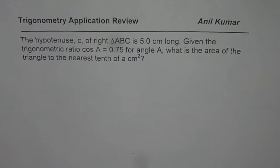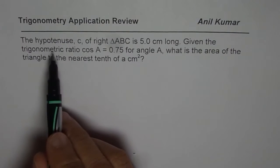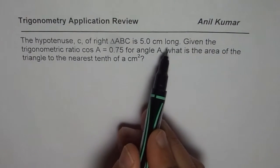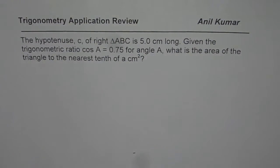I'm Anil Kumar and here is another practice question on application of trigonometry. The question is, the hypotenuse C of right triangle ABC is 5 cm long. Given the trigonometric ratio cos A equals 0.75 for angle A, what is the area of the triangle to the nearest tenth of centimeter squared?